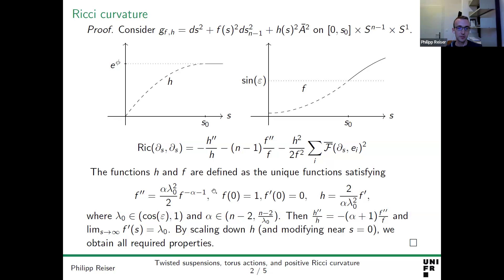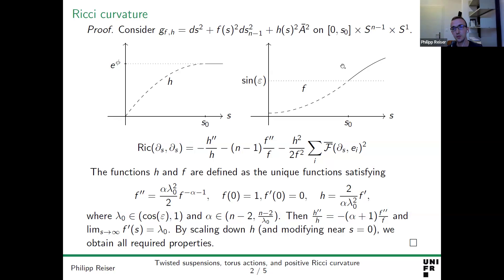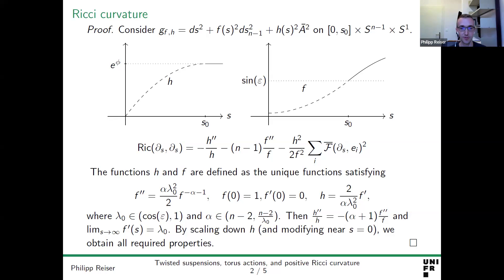We also need to consider other Ricci curvatures, handled by similar arguments. This construction glues smoothly with the original metric, giving non-negative Ricci curvature on the whole space and strictly positive Ricci curvature where we did the surgery. General deformation results due to Aubin and Ehrlich then allow us to deform the entire metric into one of strictly positive Ricci curvature everywhere. That finishes the proof.